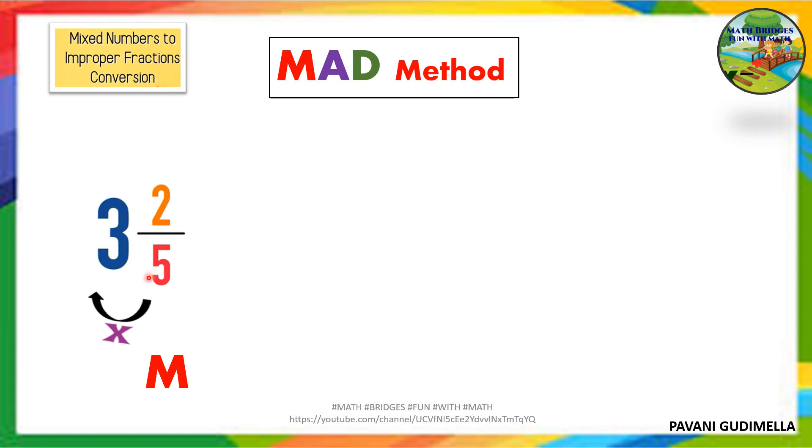M means we have to multiply. Step 1: The denominator and the whole number. 5 times 3 is 15. M for multiply. Second step A - you can guess - A means add. To this product, 5 times 3 is 15, plus 2 you should do.